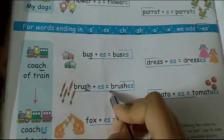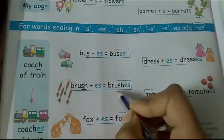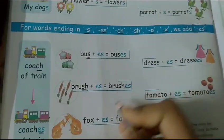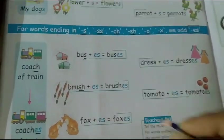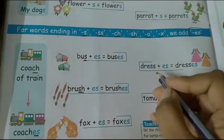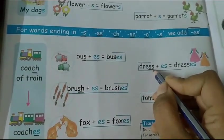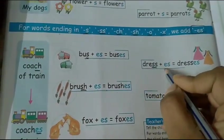Brush ends in 'sh', so we add 'es': brushes. Fox ends in 'x': foxes. Dress has double 's', so we add 'es' also: dresses.